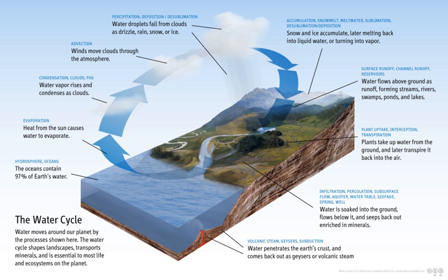The water cycle describes the processes that drive the movement of water throughout the hydrosphere. However, much more water is in storage for long periods of time than is actually moving through the cycle. The storehouses for the vast majority of all water on Earth are the oceans. It is estimated that of the 332,500,000 cubic miles of the world's water supply, about 321 million cubic miles is stored in oceans, or about 97%. The oceans supply about 90% of the evaporated water that goes into the water cycle.